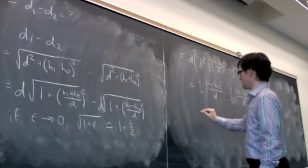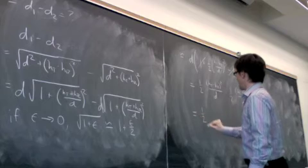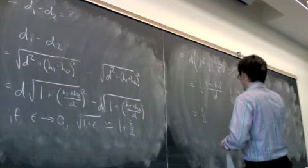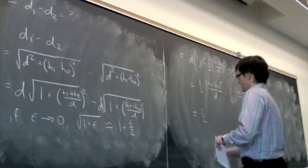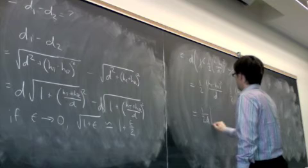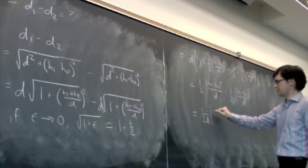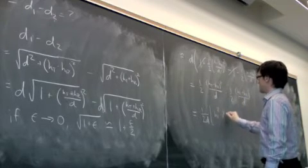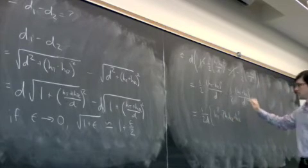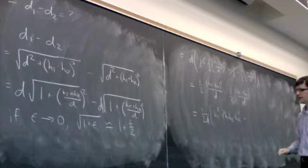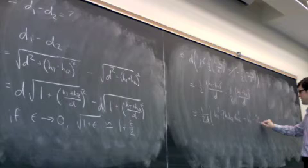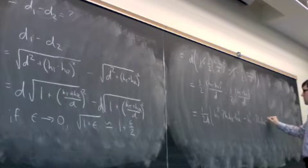And if I expand the square, I get 1/2 times hₜ² plus 2hₜhᵣ plus hᵣ². Expanding this, I have minus hₜ² minus 2hₜhᵣ minus hᵣ².